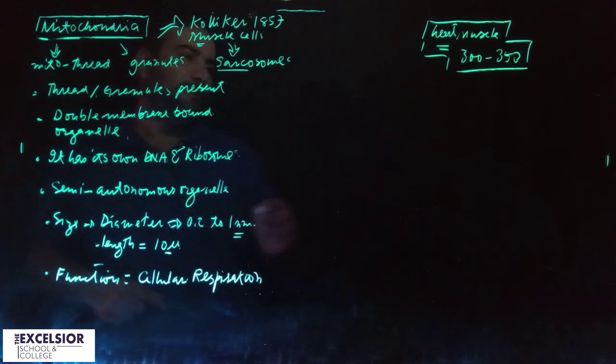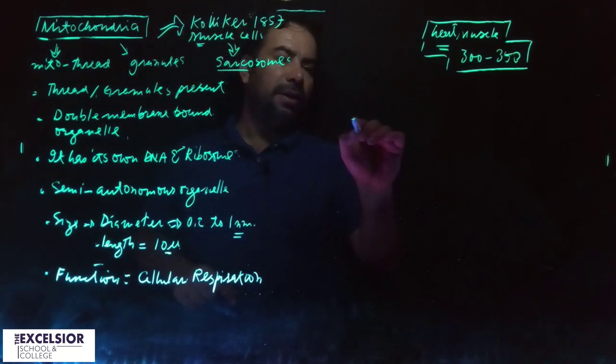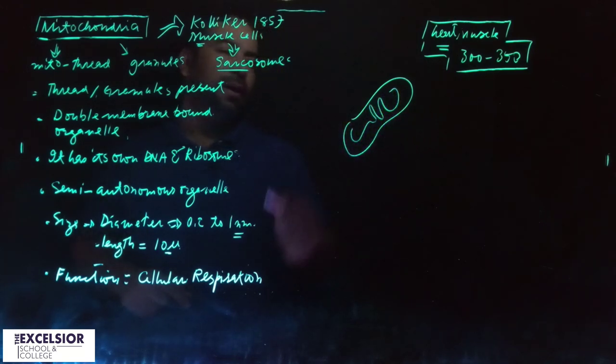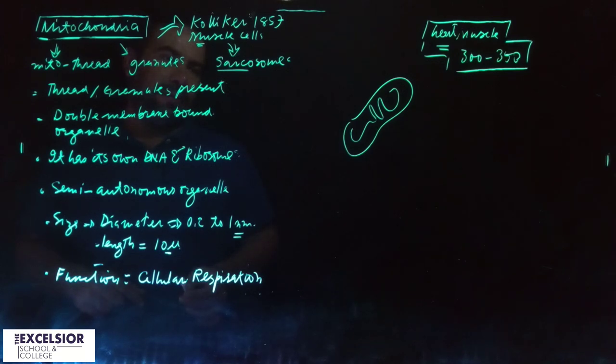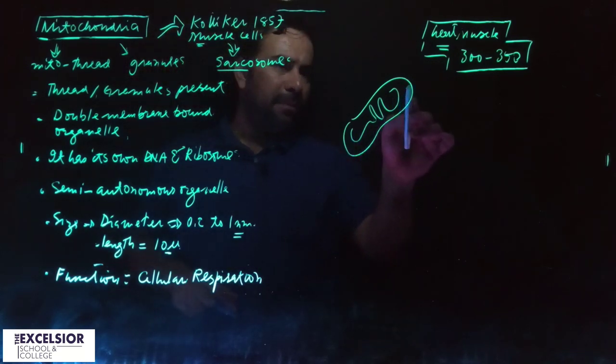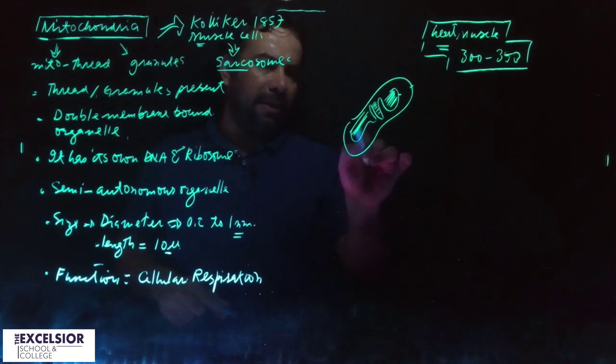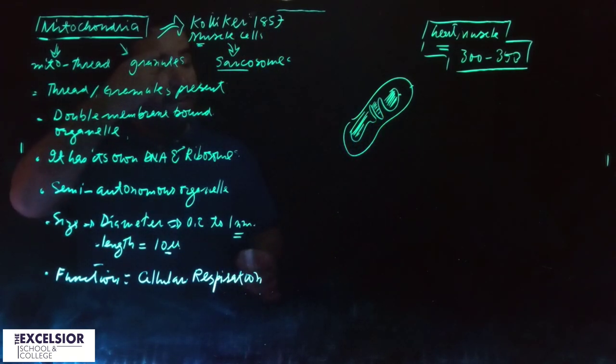How do these organelles look like? They look something like a footwear. This is a double membrane - one and two. The inner membrane has this fluid present in it. We have an outer membrane and we have an inner membrane.